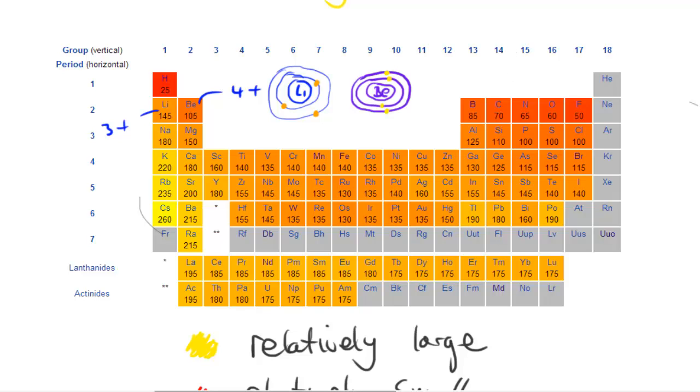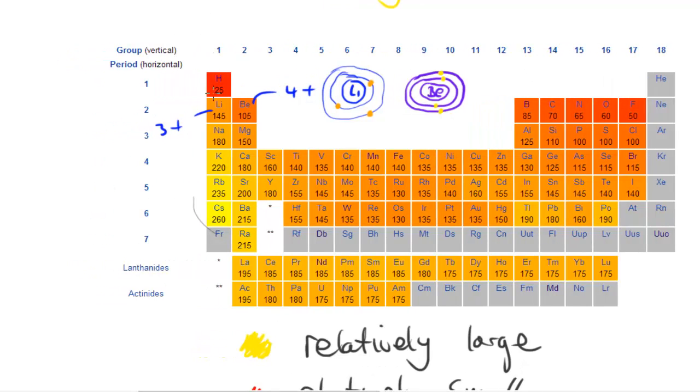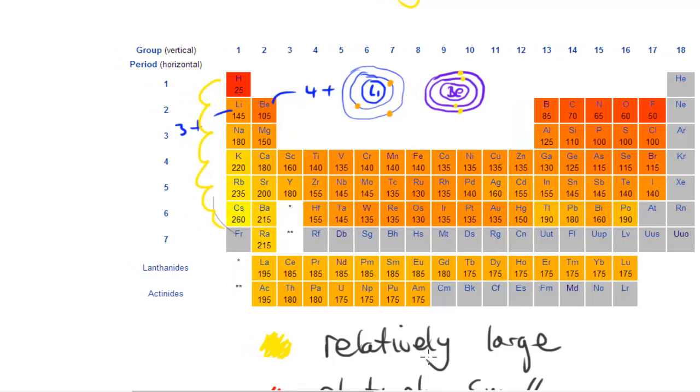Now if we actually take a look at as we jump down different shells, the reason why the atomic radius increases—and you can see it increases because it goes from red to very light yellow which means relatively large—the reason for this is because as we go down the period the number of shells increase.